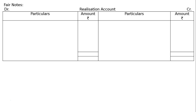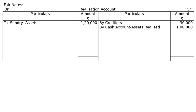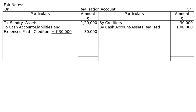In the working notes, prepare the realization account. Write down on the debit side: sundry assets rupees 1,20,000. On the credit side: by creditors rupees 30,000; assets are realized — by cash account, assets realized rupees 1 lakh. Nothing is mentioned about payment to liabilities separately, so by cash account, liabilities — creditors paid rupees 30,000. Now total the debit side: rupees 1,20,000.